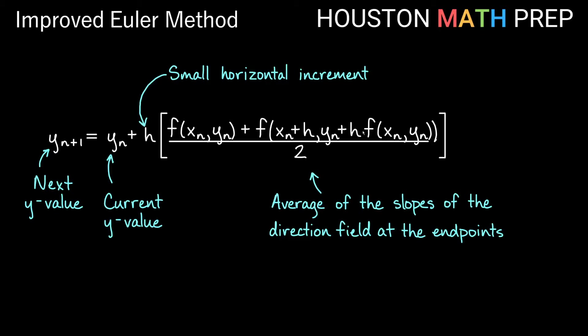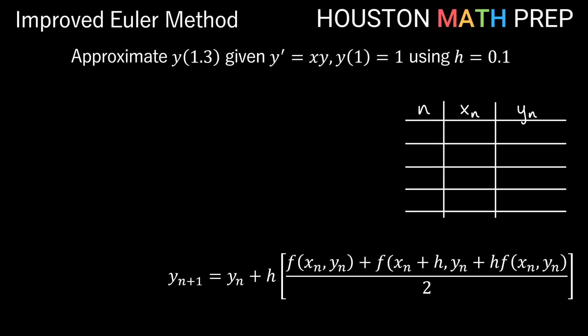One additional thing to point out: the y value that we plug in for our right-side slope is based on using the original Euler formula to figure out a y value to plug in for the right-side slope. We'll work through one example — the same example from our original Euler's method video.